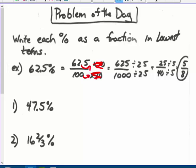So you get 625 over 1,000. They do have 125 in common, but you may not see that, so you take a quarter out of each of those, or 25s out of each of those, and then divide by 5 again, and you get 5 eighths. Do that same thing with number 1, 4, and 5.